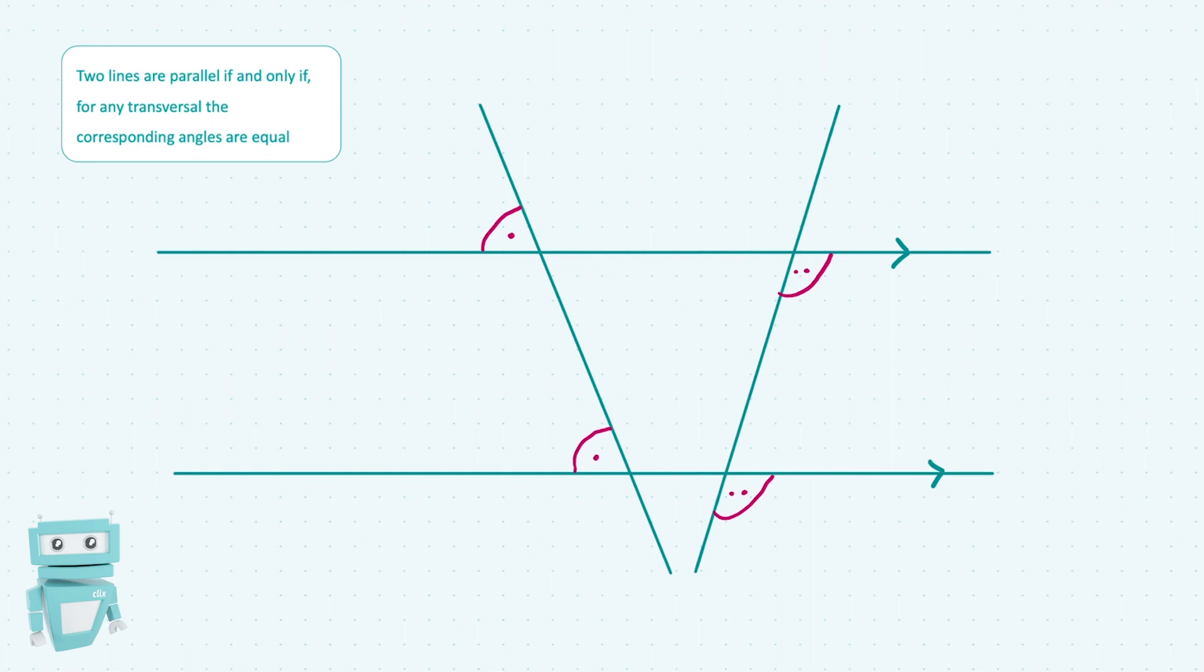If the corresponding angles are equal, as they are here in the second case, then we can say the lines are parallel. And if we can say the lines are parallel, we can equally say that the corresponding angles are equal.